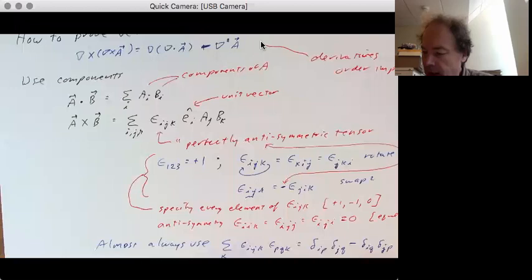It's the epsilon i, j, k. We're just using this relation right up here. E hat i. And then the first one is the del. So they're going to write that one as del j. And then it's del cross a sub k.